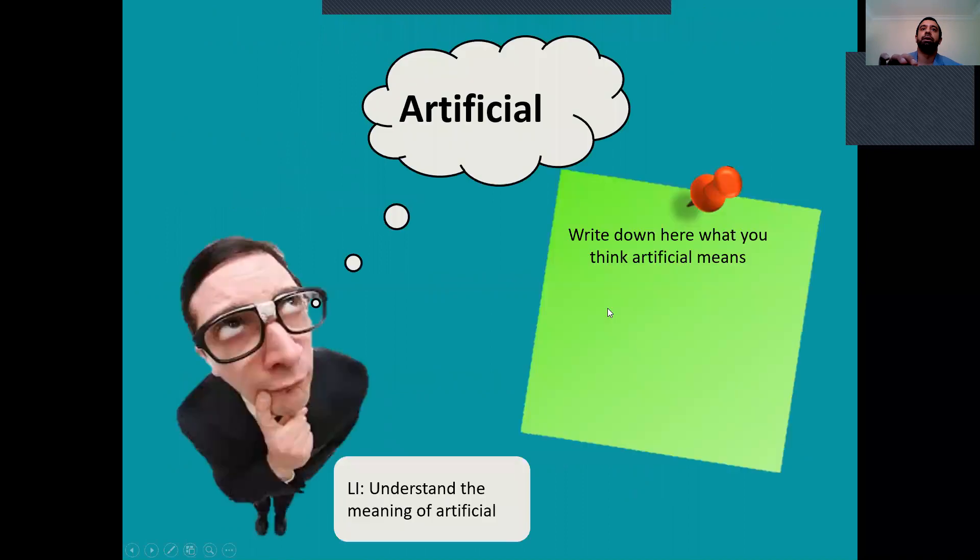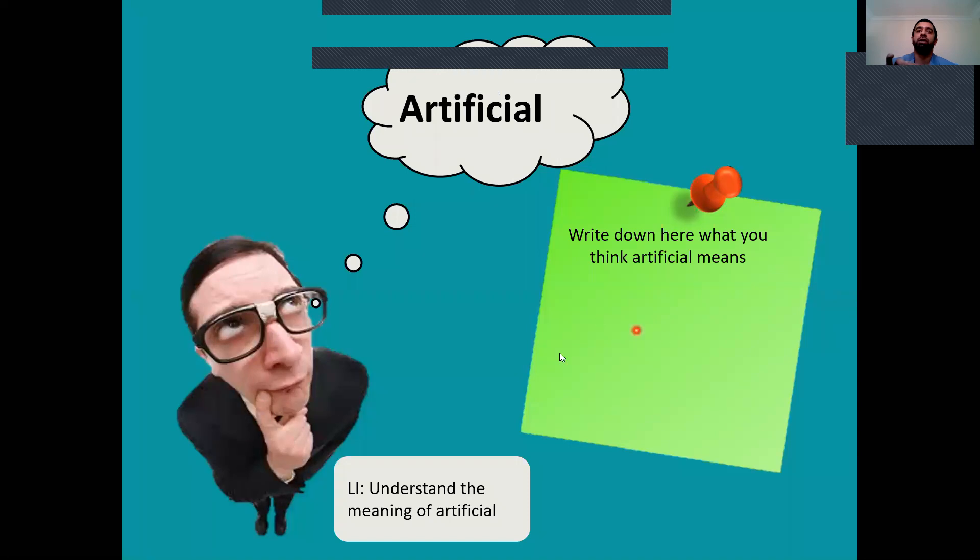Okay, so today's lesson we're going to understand the meaning of artificial, and we're also going to have a go at making our first origami shape. I'd like you to pause the video now and fill out this section here, where it says write down what you think artificial means. What does the word artificial mean to you? I will give you two minutes to write it down. Pause the video now.